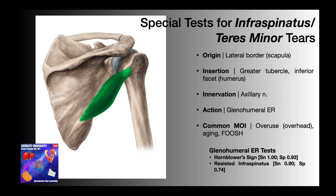Like the infraspinatus, common mechanisms of injury for the teres minor include overuse, particularly with repetitive overhead movements, aging, and FOOSH injuries. The teres minor is also particularly susceptible to fatty infiltrates, which lead to degeneration of the muscle and tendon. Even though the teres minor can be damaged due to repetitive overhead movements and age-related degeneration, these mechanisms are much more common for the infraspinatus and the supraspinatus, which we will cover in a separate video.